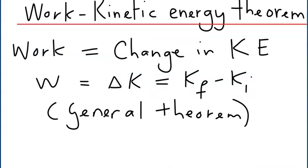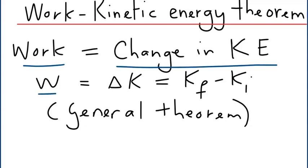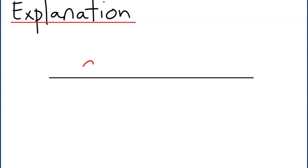Now let's bring the two concepts together in the work-kinetic energy theorem. The theorem states that the work done by a net force on an object equals the change in kinetic energy of the object: W = ΔK = K_f − K_i.